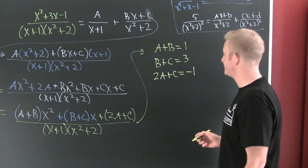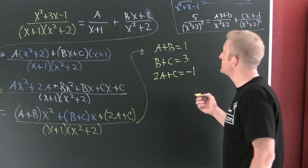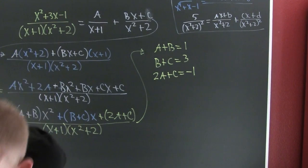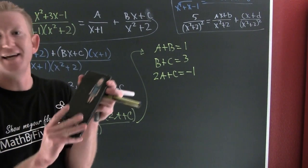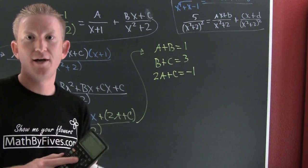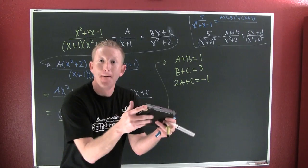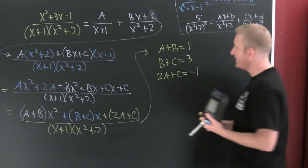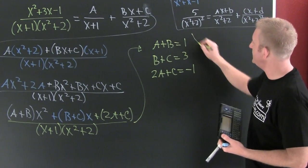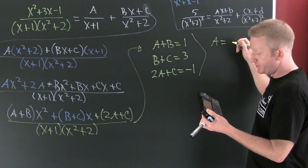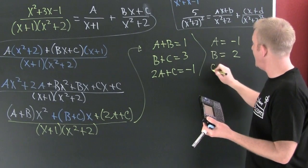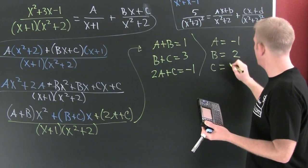I could use elimination, substitution, or I can throw it into a trusty graphing calculator — like this one. Throw it in the matrix. And when I did, I see that A equals negative 1, B equals 2, and C equals 1.